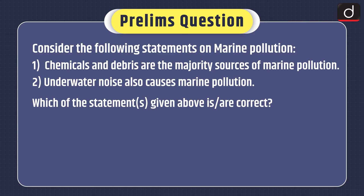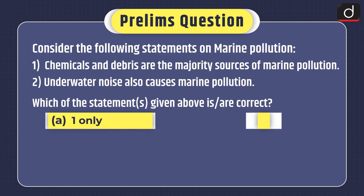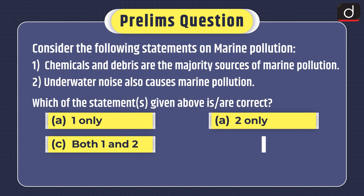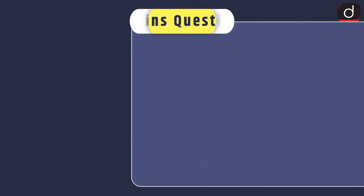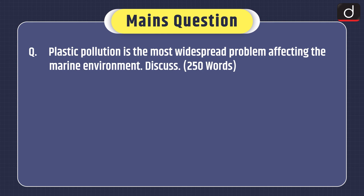Now it's time for practice questions. Prelims-based practice question: Consider the following statements on marine pollution. One — chemicals and debris are the majority sources of marine pollution. Two — underwater noise also causes marine pollution. Which of the statements given above is or are correct? One only, two only, both one and two, or neither one nor two. You can send the answer in the comment section. Mains question: Plastic pollution is the most widespread problem affecting the marine environment. Discuss.